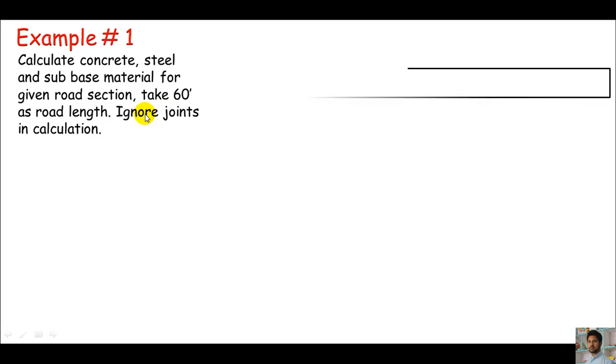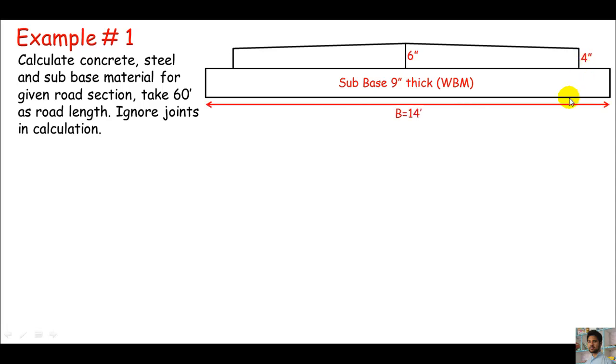Here is the section of this road. The sub-base is taken as 9 inch thick, which is water bound macadam. RCC work at middle is 6 inch and 4 inch at edges. The breadth of sub-base is 14 feet and the carriageway is 12 feet. We are also informed to take 1% steel in RCC work.